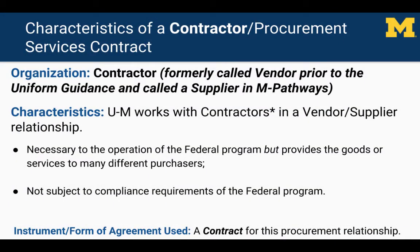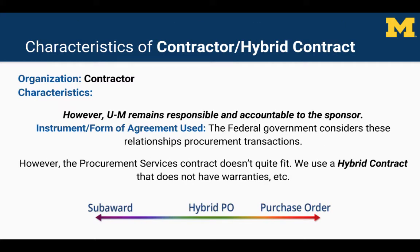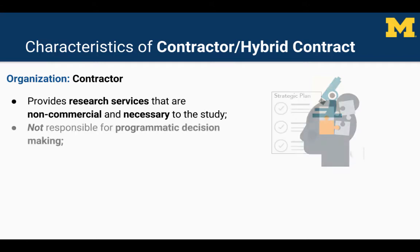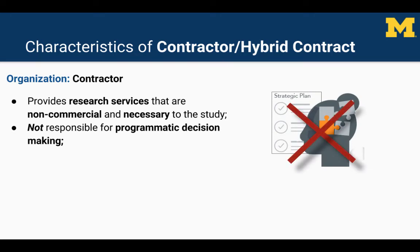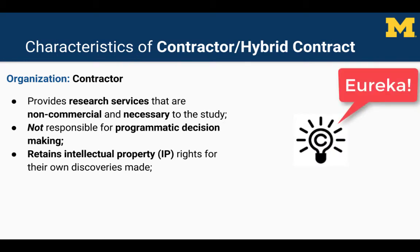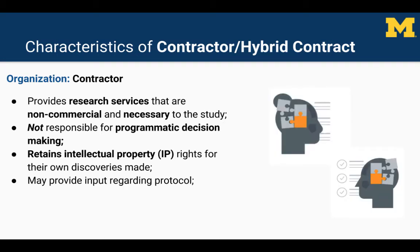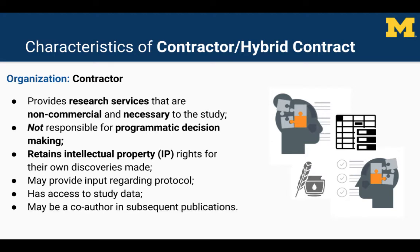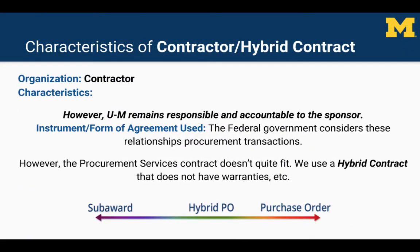These contracts are ancillary — in other words, the organization provides necessary support to the study, but U of M remains ultimately responsible for the outcome of the program. When U of M enters into a hybrid contract transaction, U of M is purchasing non-commercial research services in support of the project. The contractor is not responsible for programmatic decision-making. The contractor retains IP rights for discoveries, provides input regarding the protocol, has access to the study data, and may even be a co-author on primary papers. But U of M remains responsible and accountable to the sponsor for the program.